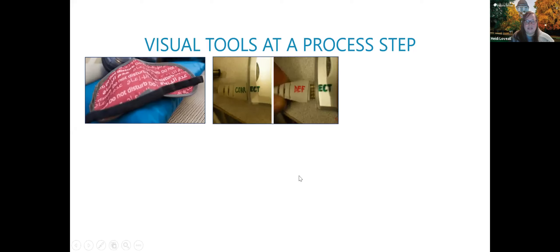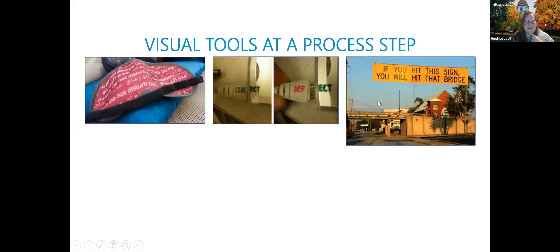That simple visual tool reduced errors significantly and increased customer satisfaction. Another example: using a little bit of marker as a visual indicator on a USB plug can reduce those few seconds of waste every time you plug something in. And this bridge sign — 'If you hit this sign, you will hit that bridge' — is very clear. I always want to know what story led people to put that sign up, and how many times was that bridge knocked before the sign went up. But sometimes a clearance sign might just say '8 feet 6 inches' — and maybe you know how tall your vehicle is, maybe you don't. This sign is very, very clear.